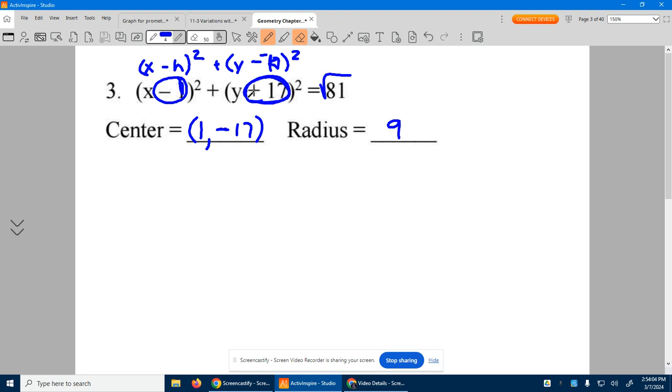Again, it's easiest just to take the opposite of whatever number you have there to get your center, and the radius is always just the square root.